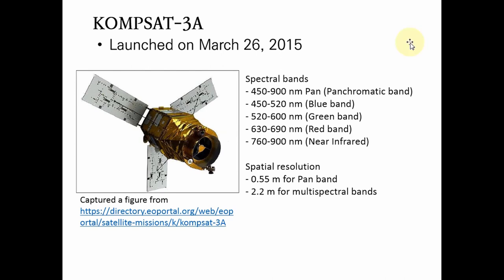The first band is the panchromatic band, the second is the blue band, the third is the green band, the fourth is the red band, and the final one is the near-infrared band. The spatial resolution of the KOMPSAT-3A satellite image is 0.55 meters (55 cm) for the panchromatic band and 2.2 meters for the multispectral band. The multispectral band resolution can be improved to 0.55 meters by using the panchromatic band.